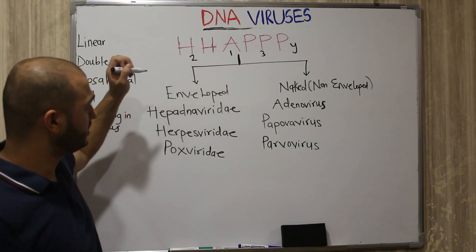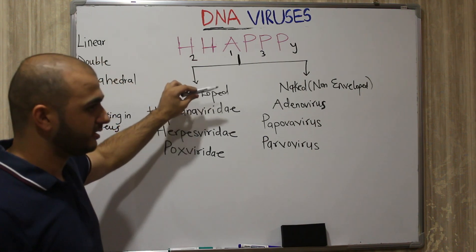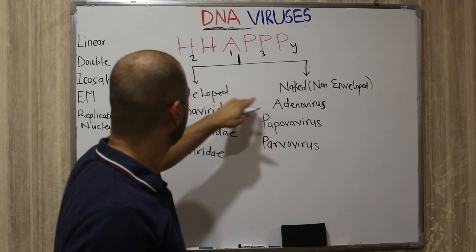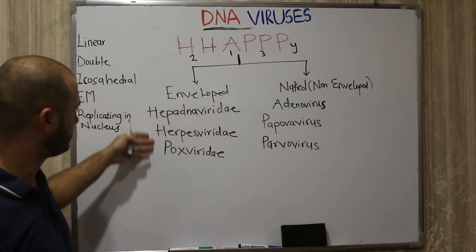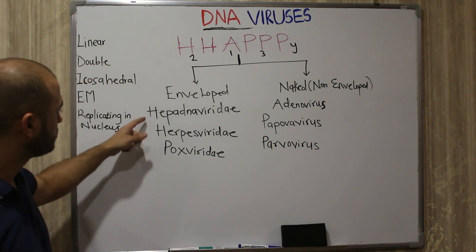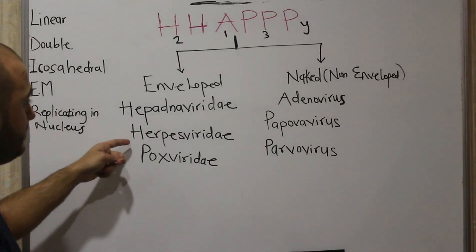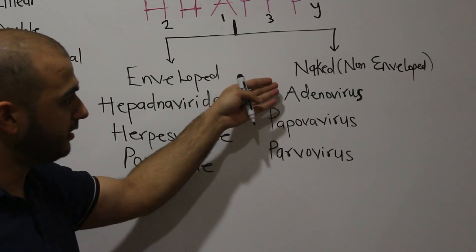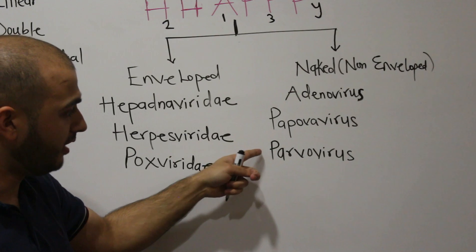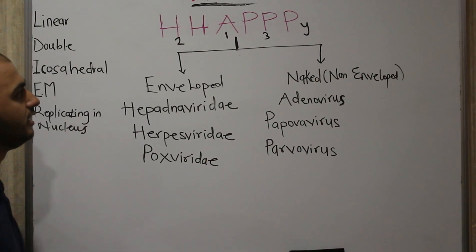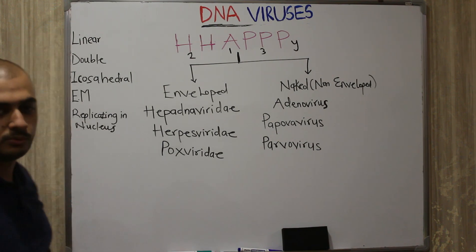We divide these six families according to the envelope. There are non-enveloped (naked) viruses and enveloped viruses. Under the enveloped group there are three viruses, and the rest are in the naked group. Under enveloped: Hepadnaviridae, Herpesviridae, and Poxviridae. Under naked: Adenovirus, Papovavirus, and Parvovirus — three enveloped and three naked.